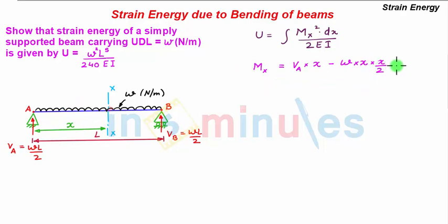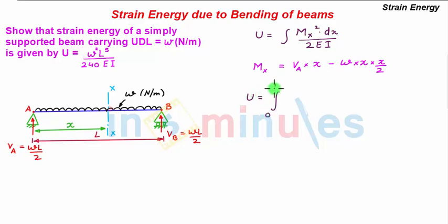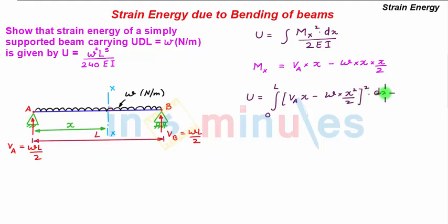Substituting the value of Mx in the strain energy equation, we can determine the strain energy stored in the whole beam. Therefore, strain energy U = ∫₀ᴸ Mx² dx / 2EI, where Mx = (VAx − Wx²/2), so U = ∫₀ᴸ (VAx − Wx²/2)² dx / 2EI.